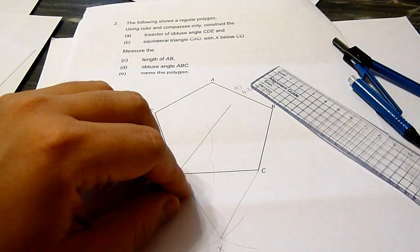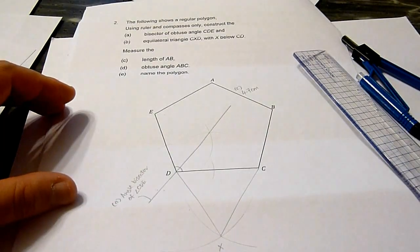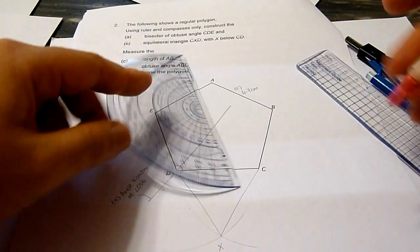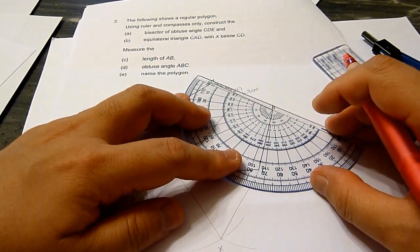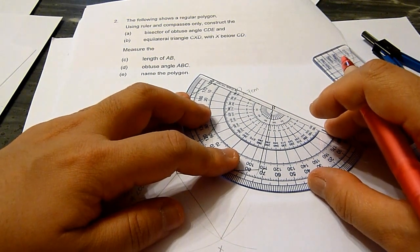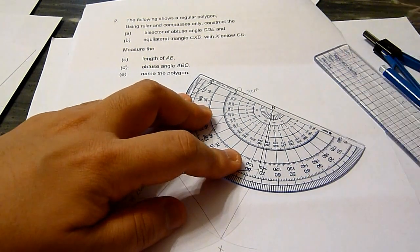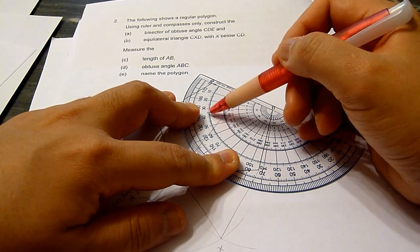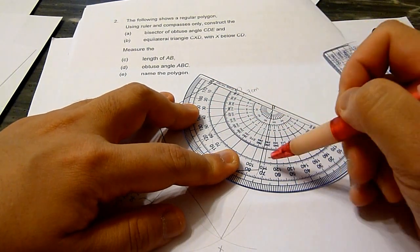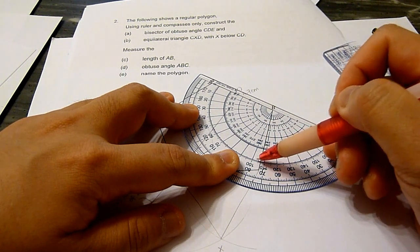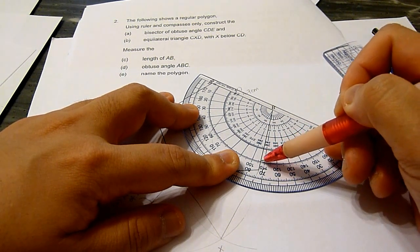Measure the obtuse angle ABC, reading from one arm to the other arm. It is 107 degrees.